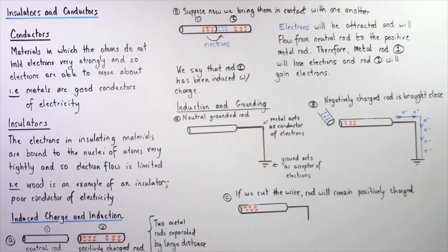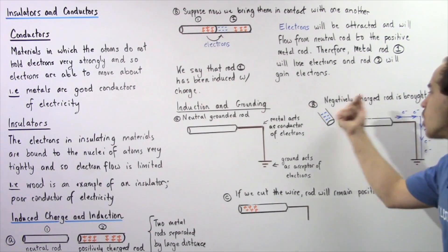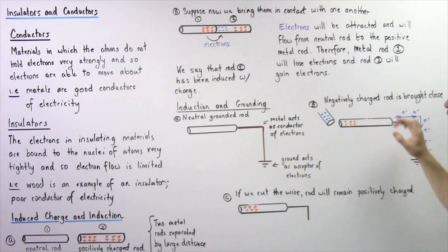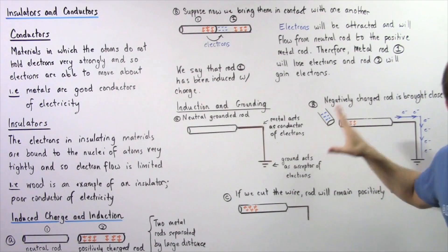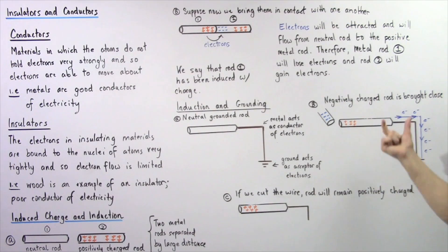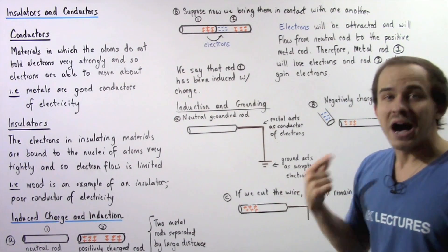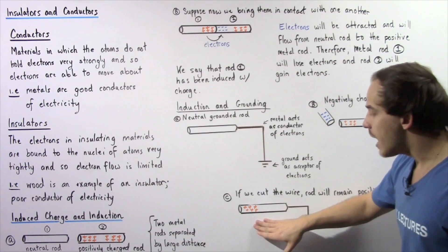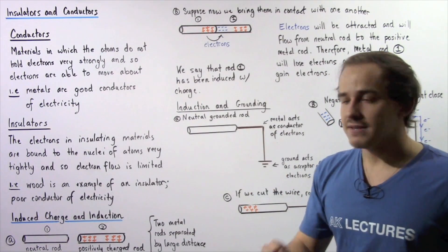Now what will happen if I cut this wire? So if I cut the wire, the charge that was developed on this object will remain on that object. If this object was positively charged, this object will remain positively charged.